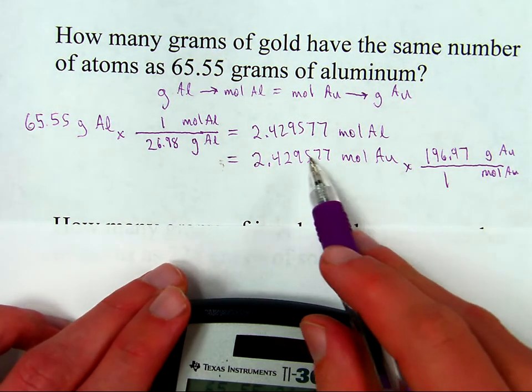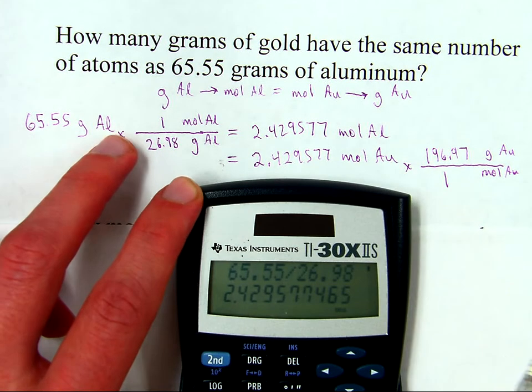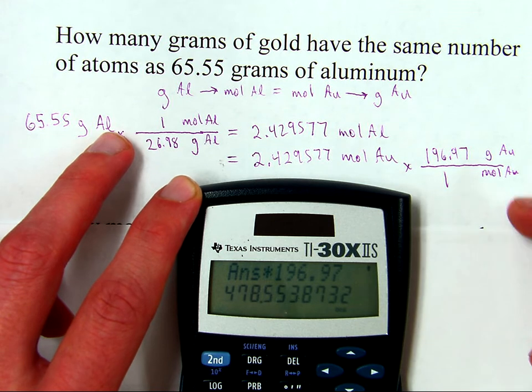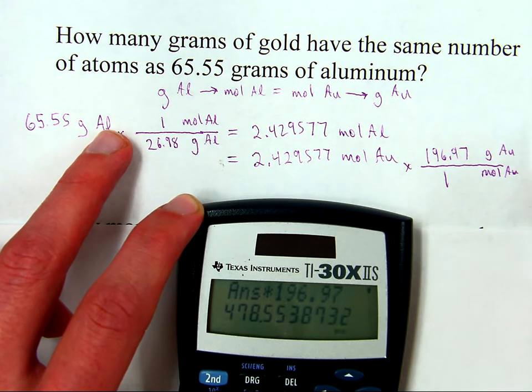Okay, so according to this, I just take this number and times it by that. So I've still got that number on the calculator. So I'm now going to times it by 196.97. There's the final answer, 478 grams of gold.